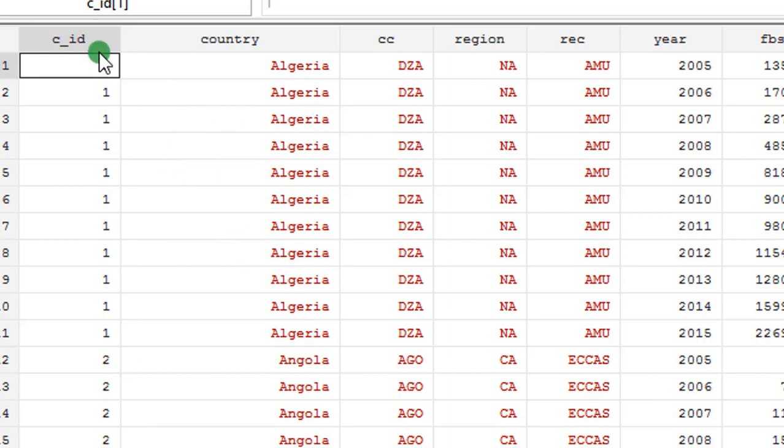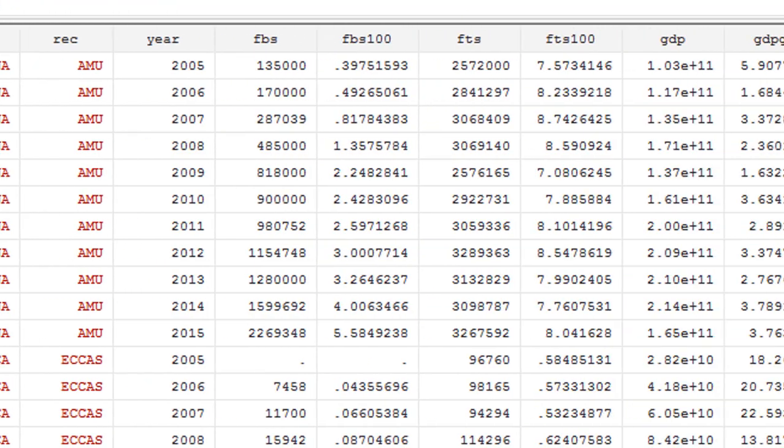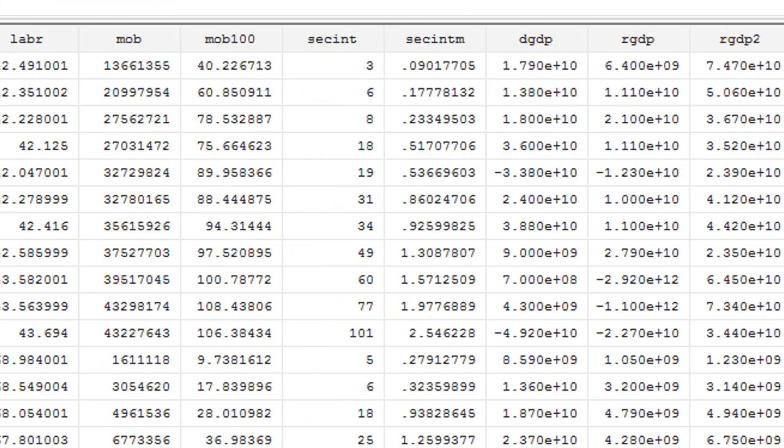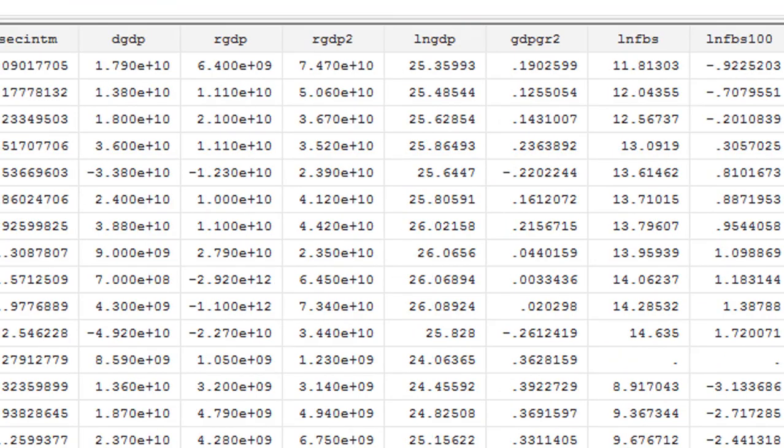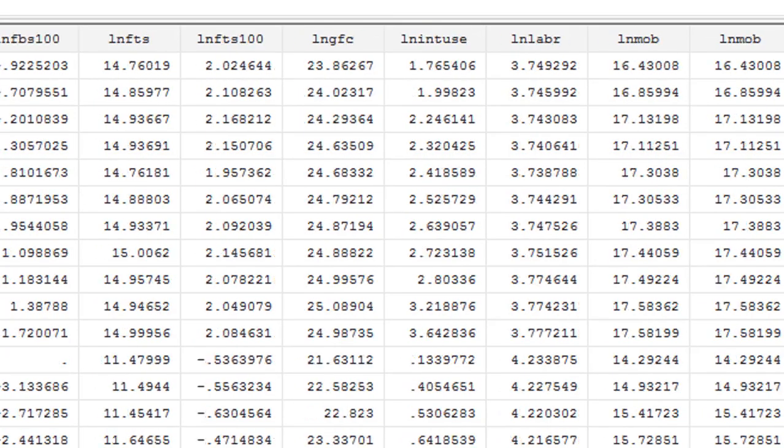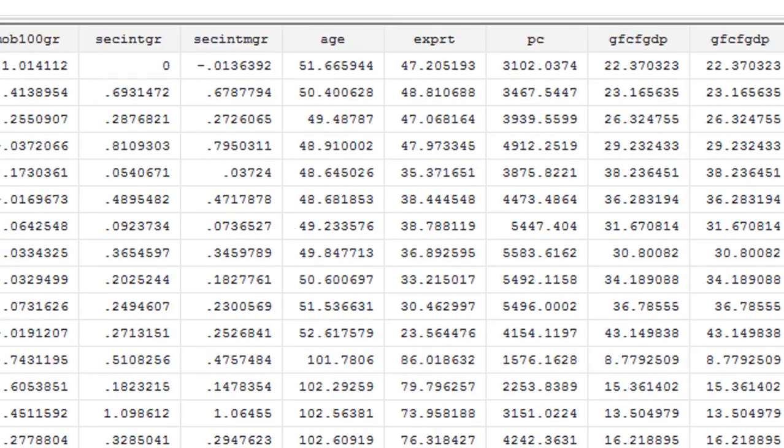In addition to that, each of the countries have their own respective IDs. Each country is identified by a numeric number from number one to 54. If I take you across the data, out of this whole lot of variables, I'll be using only five variables.